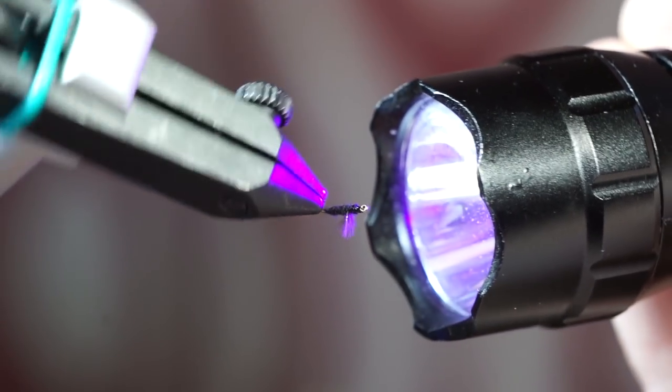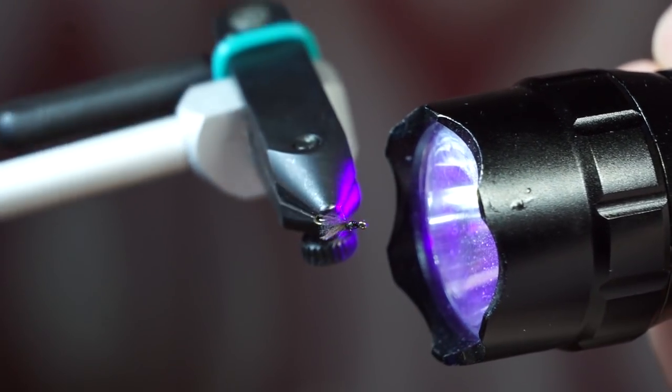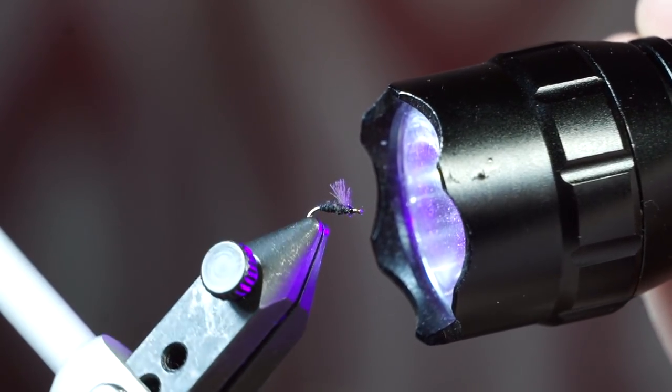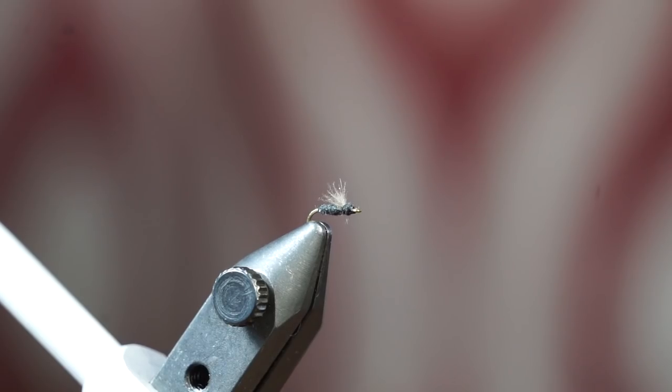And there we have it, the RS2. It's a very effective and popular fly, and depending on the size and color it can mimic an emerging midge or even a baetis, so they're very versatile.